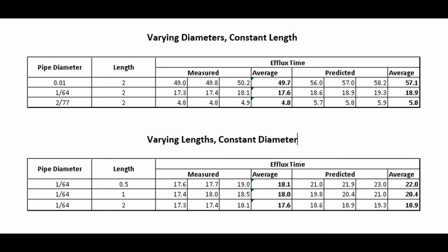The results of the experiment can be seen in these two tables. The top table shows the pipes with the same length and varying diameters. It can clearly be seen that the smaller diameter has a much greater efflux time than the larger diameter pipe. The values range from approximately 50 seconds for the diameter of 1/100th to 5 seconds for the diameter of 2/77th of an inch.